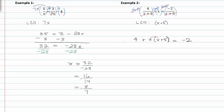We're going to now distribute the x through to both terms inside that binomial, and we'll have four plus x squared plus five x is equal to negative two.